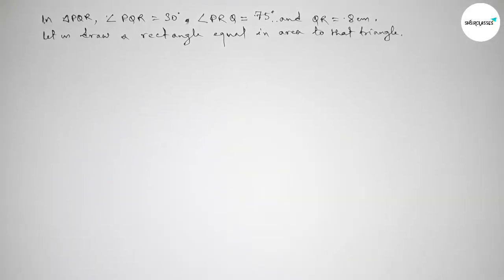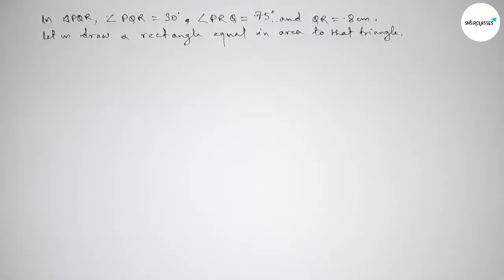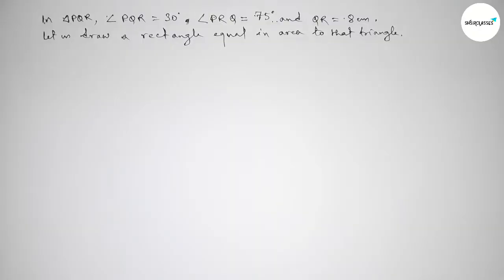Hi everyone, welcome to SI Share Classes. Today in this video we have to first construct a triangle PQR with given angle PQR equal to 30 degrees, angle PRQ equal to 75 degrees, and a side of 8 centimeters. Then we'll be constructing a rectangle equal in area to the triangle. So let's start the video.